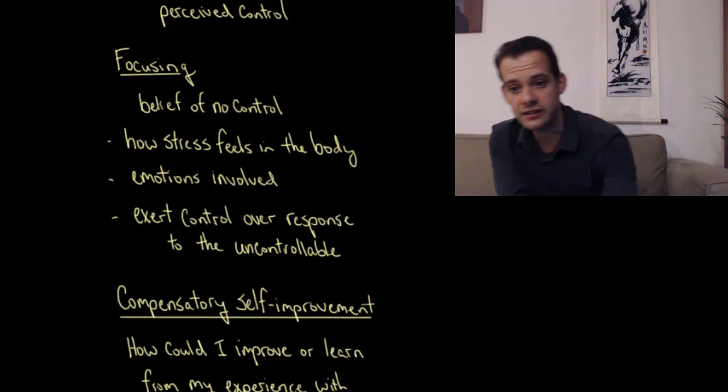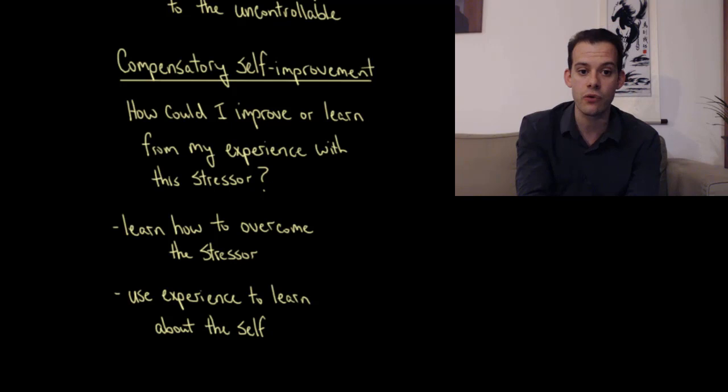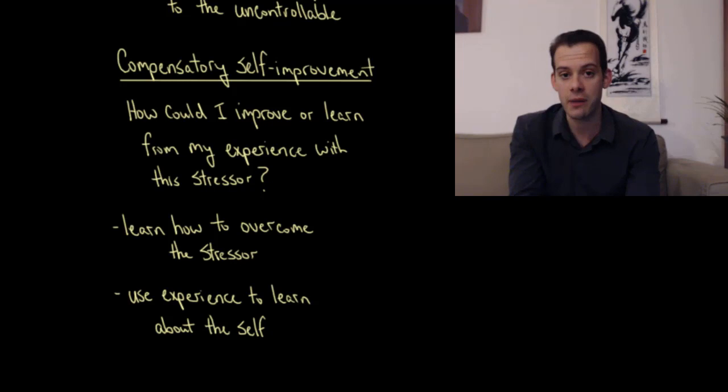And lastly, we have the idea of compensatory self-improvement. This is asking yourself how you could improve or learn from your experience with the stressor. Now that learning might come in learning how to overcome the stressor. I have this obstacle and I'm going to learn how to overcome it. And then in the future, I'll be able to deal with it.